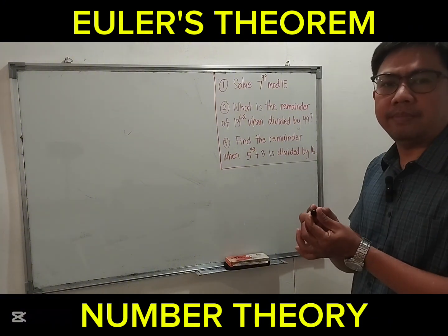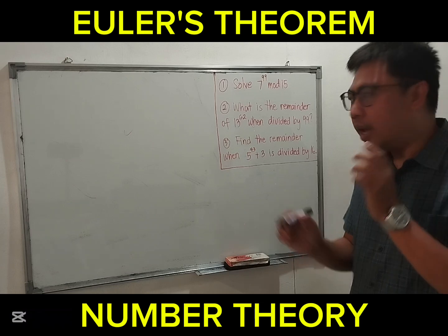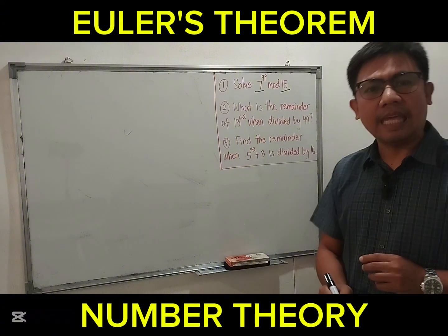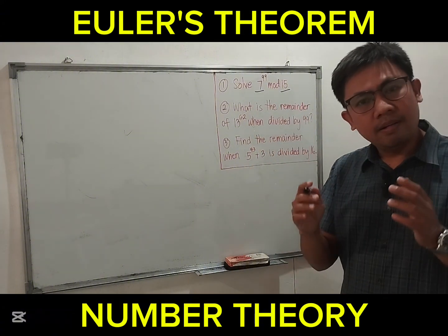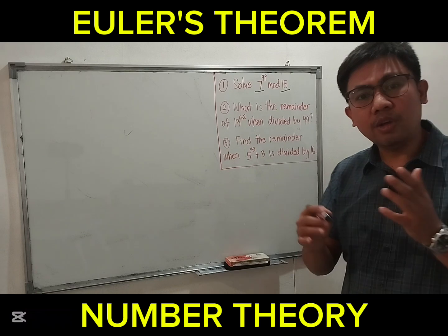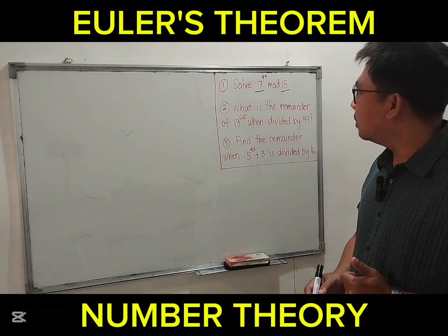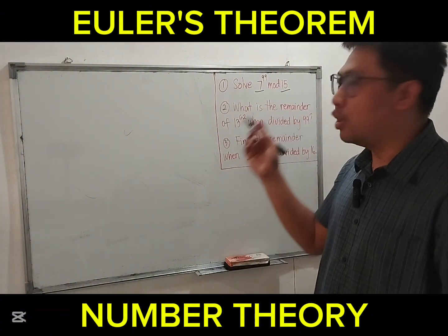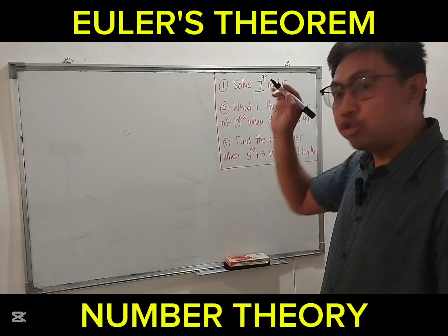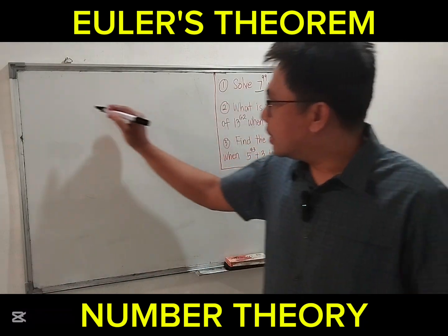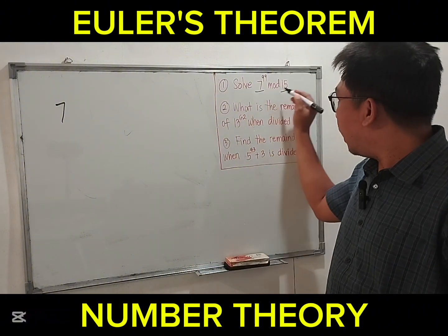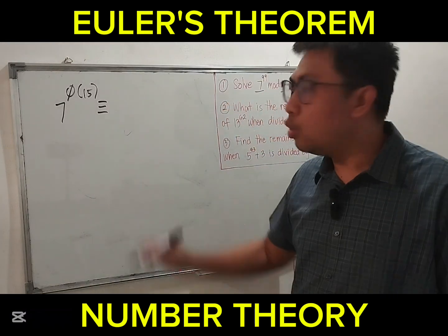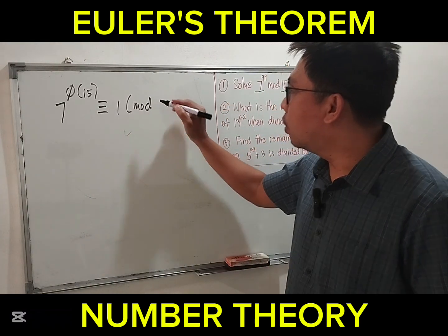According to Euler's theorem, A and N must be co-prime. So A here is 7 and N is the modulus, 15. So 7 and 15 are co-prime — they don't have any common factor. Therefore, we can apply Euler's theorem. So we have 7 to the phi of 15, which is congruent to 1 modulo 15.